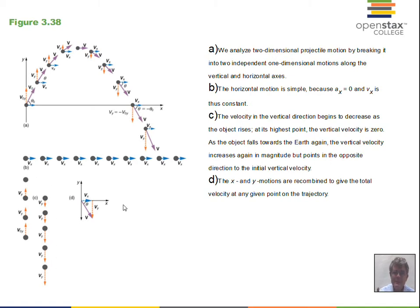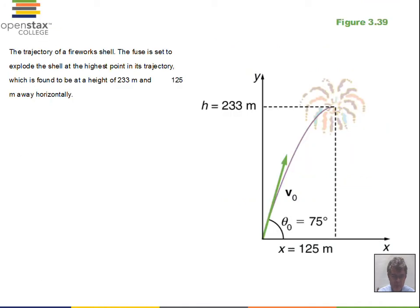This is breaking down the motion — it all happens at once of course, but we can simplify our work. In the x direction only, because the acceleration is zero, we can use distance equals rate times time. In the y direction we have to use our four kinematic equations.